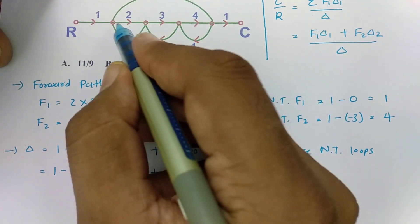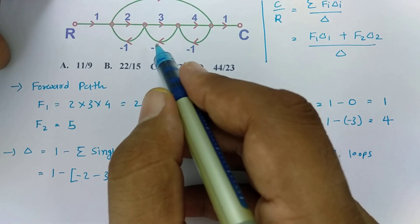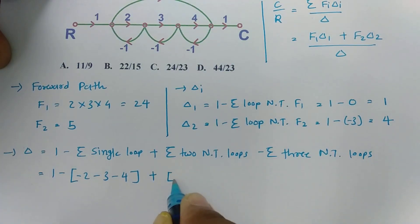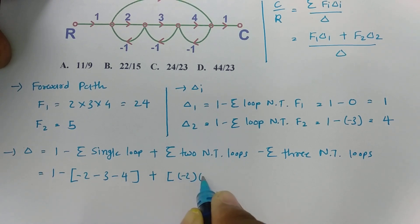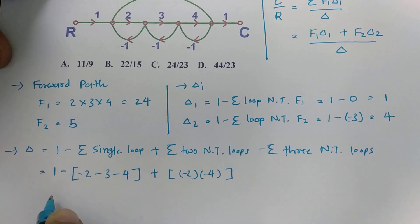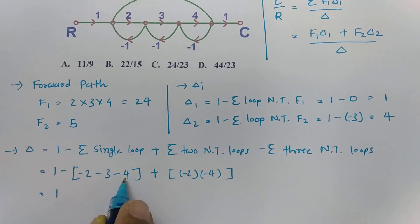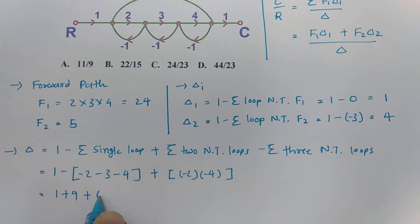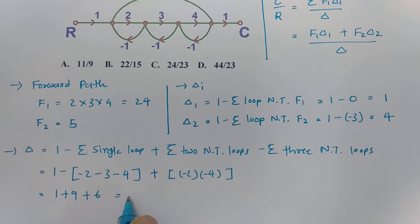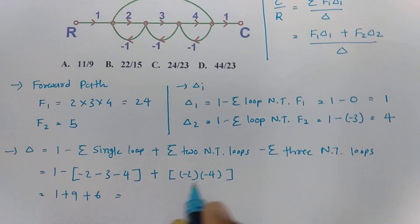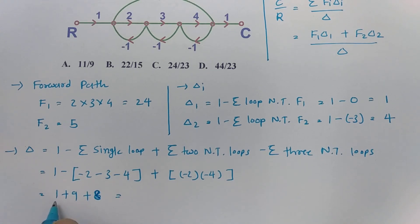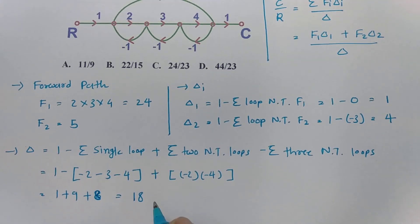For two non-touching loops, only minus 2 and minus 4 are non-touching; all other combinations are touching each other. So we add minus 2 into minus 4 equals plus 8. Simplifying: 1 minus (minus 2 minus 3 minus 4) plus 8, which gives 1 plus 9 plus 8, so delta equals 18.